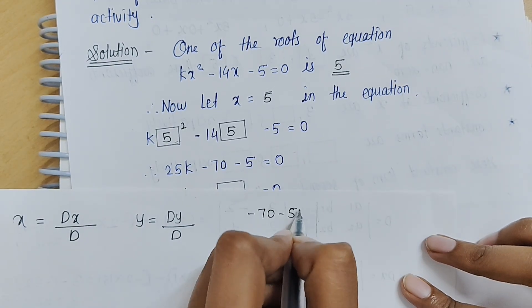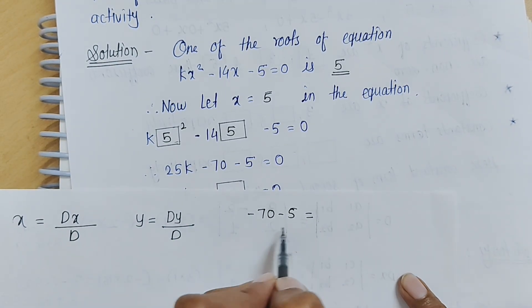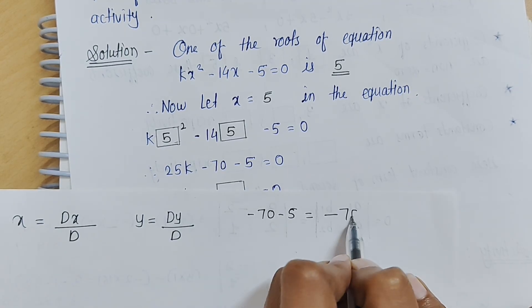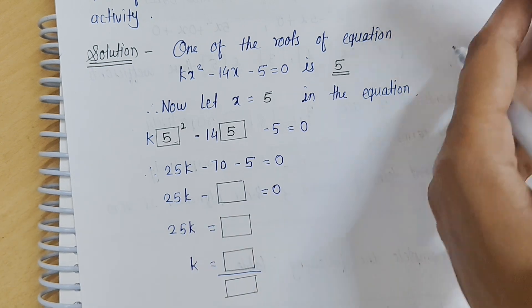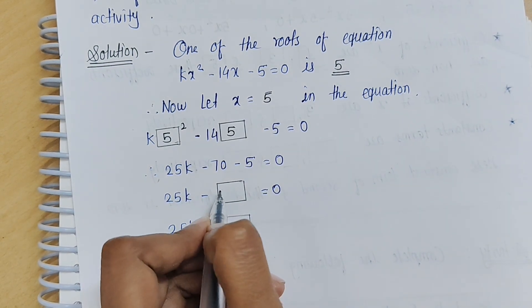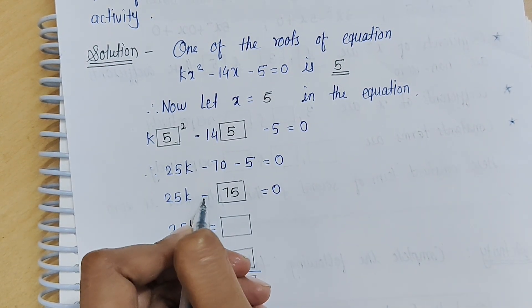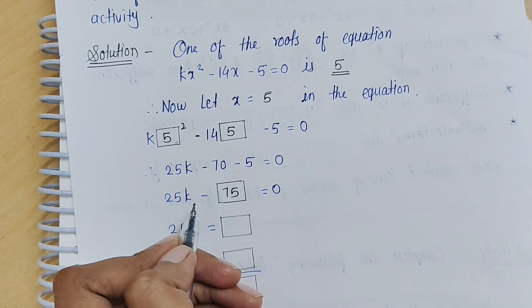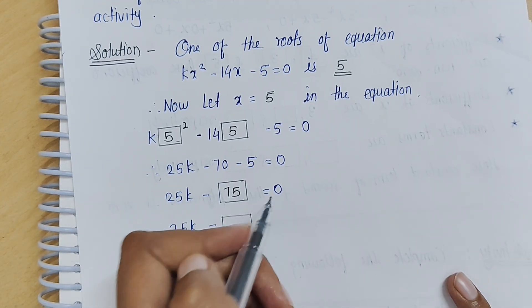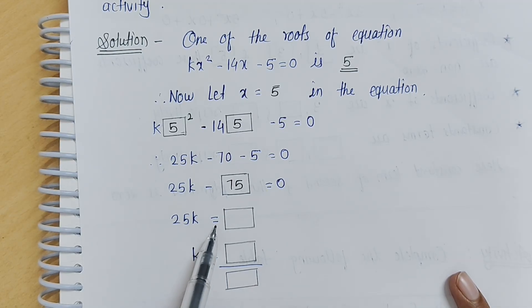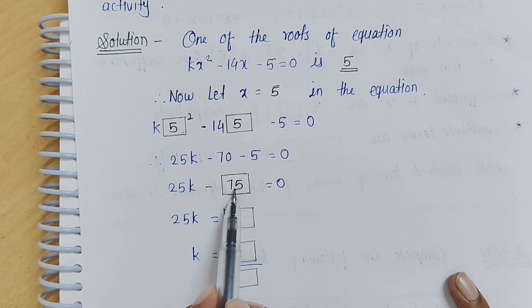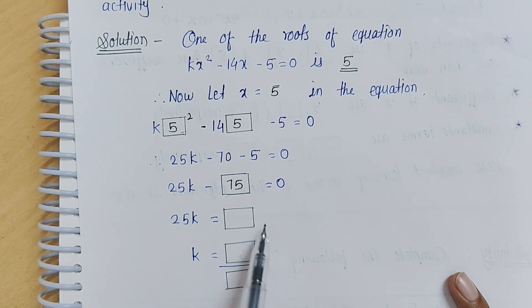Minus 70 minus 5. The addition will be added, but the sign is negative. So 70 plus 5 which is 75, but this is negative. We will put up here, and the negative term is already given, so we will not write it again. So 25k minus 75 equals 0.